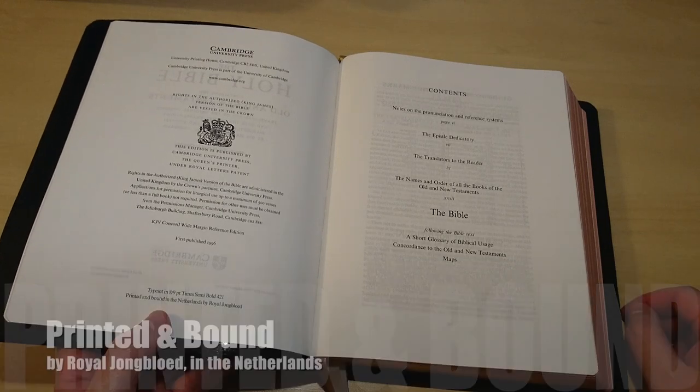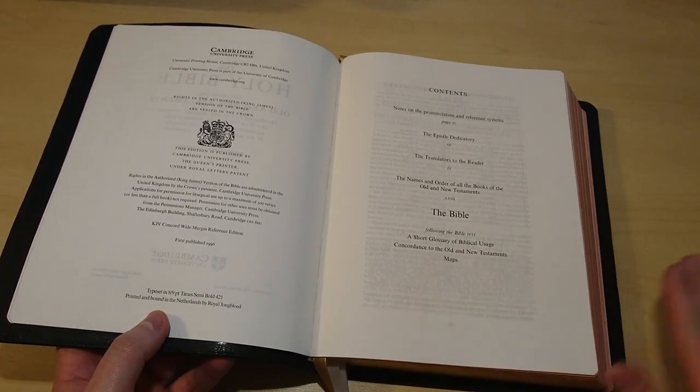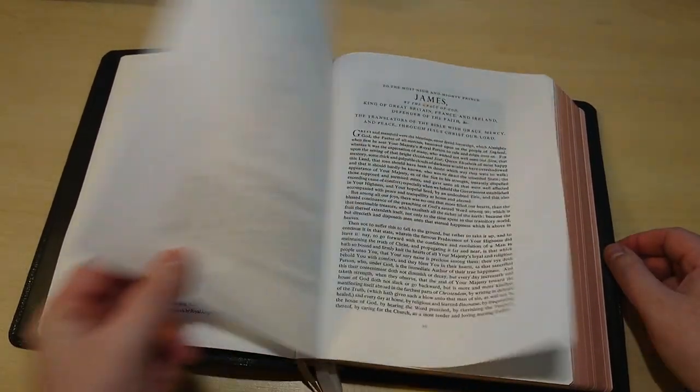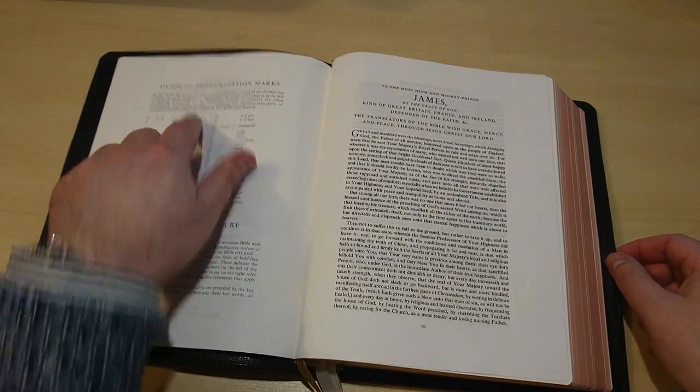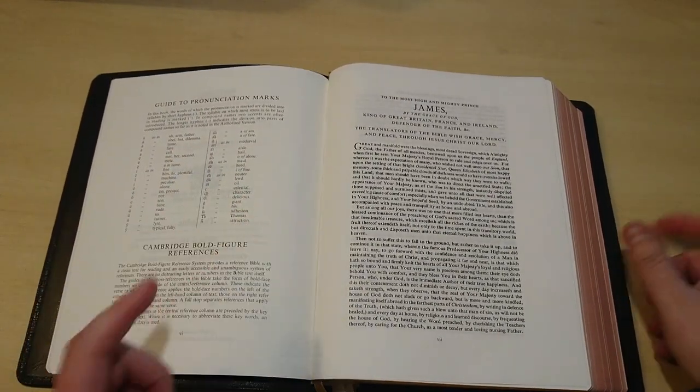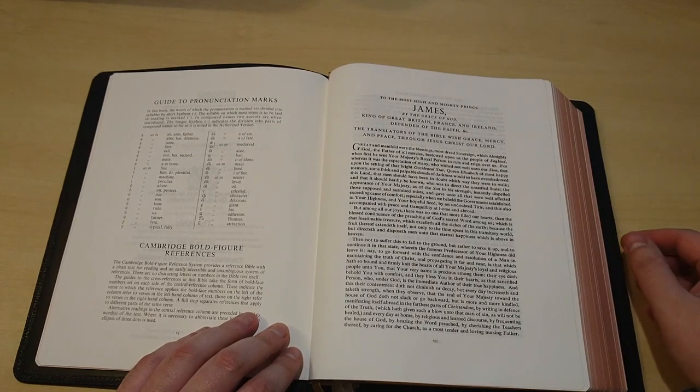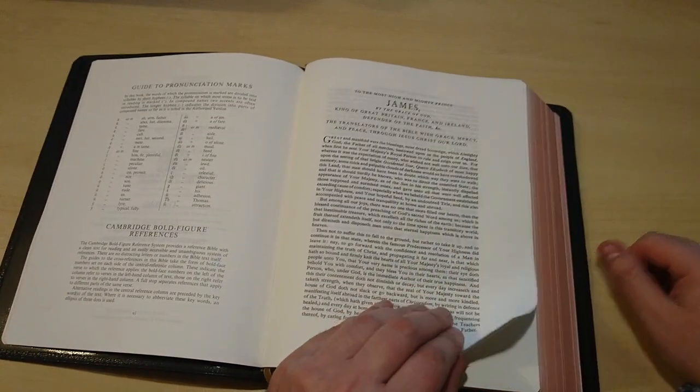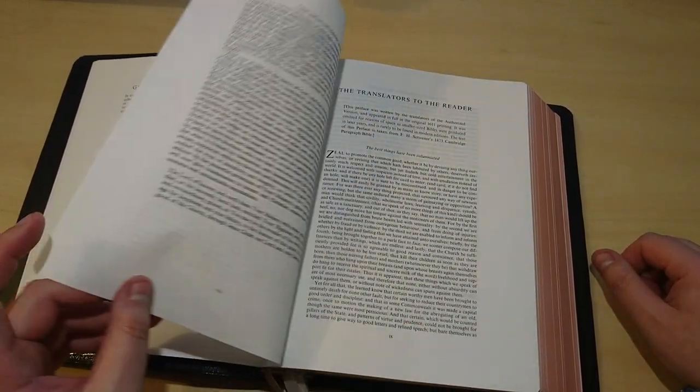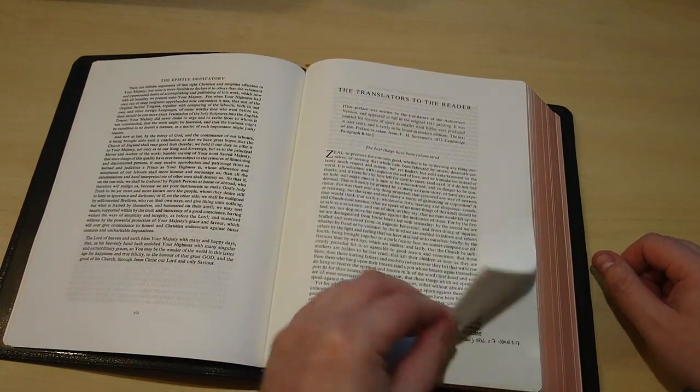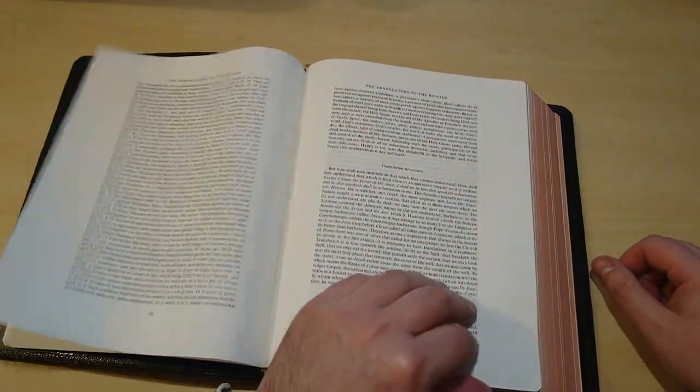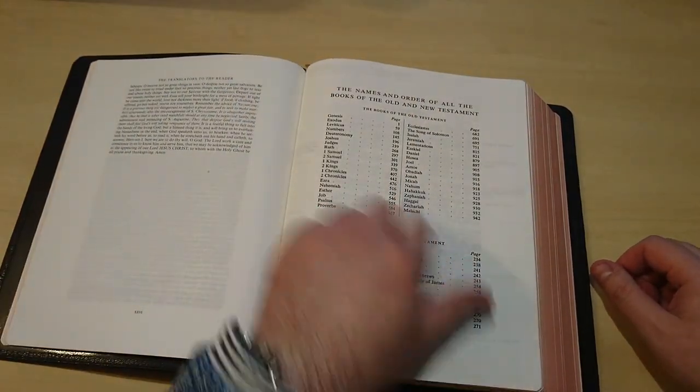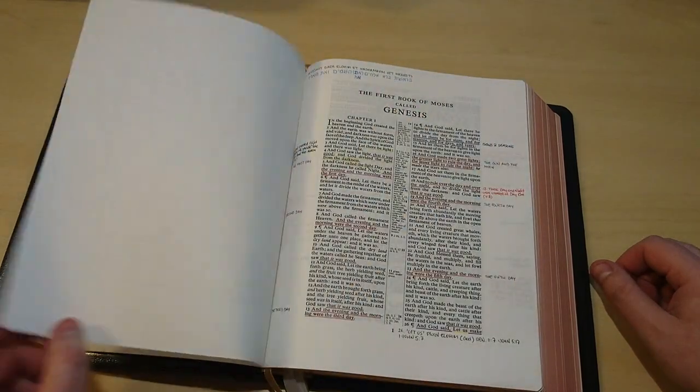It comes with a guide of pronunciations for the different names and probably archaic names that you may find in the King James. It also tells you here this is the letter to the King James, and translator to the reader, if you want to have a look at it—very interesting. Nevertheless, names and order of all books of the Old and New Testament.